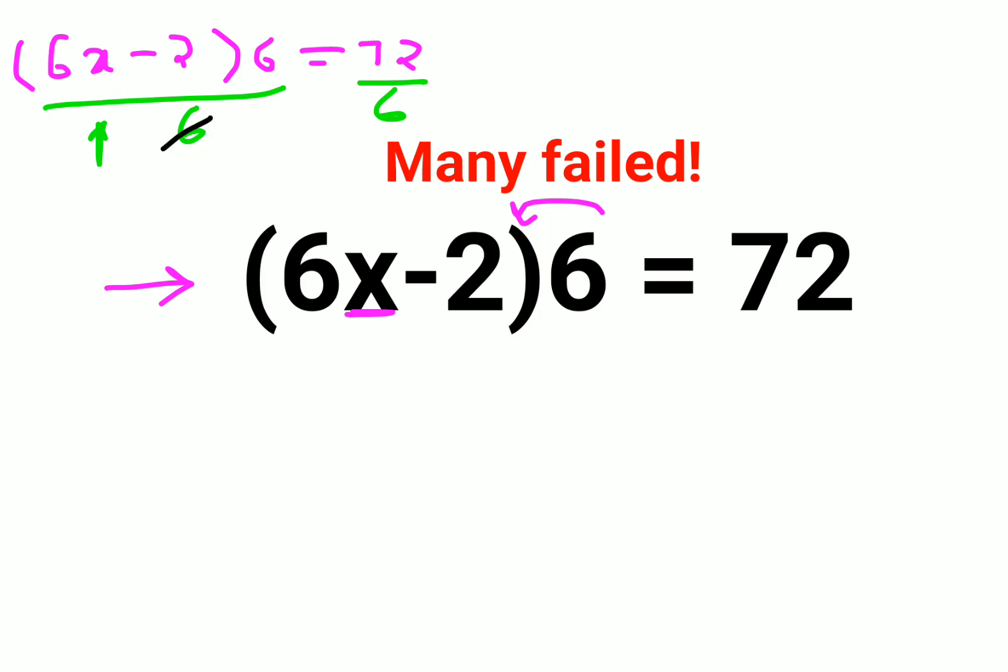So in this case, you will see this and this gets cancelled and this is 1s are and 12s are. So now we are getting 6x minus 2 equals to 12.